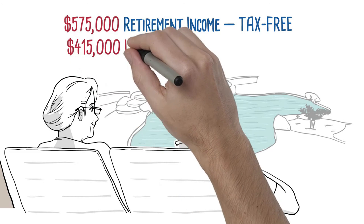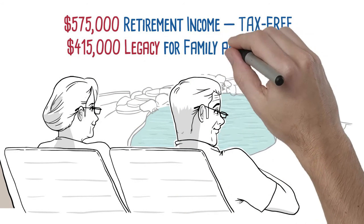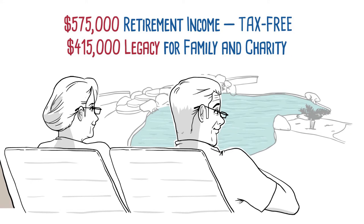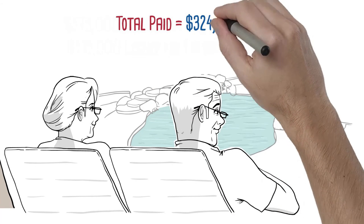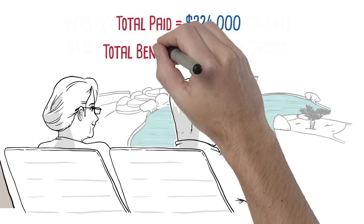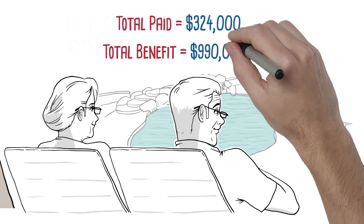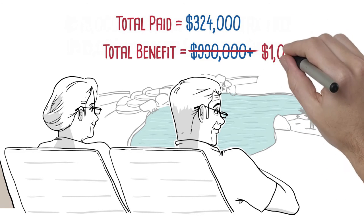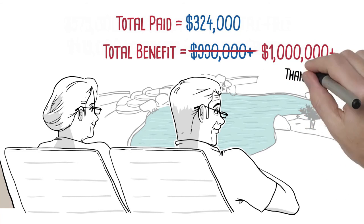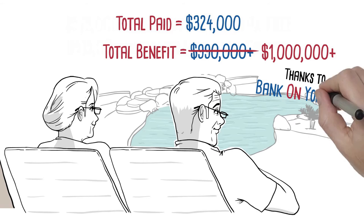And there's still a death benefit of $415,000, so Kevin can leave a legacy for his family and his favorite charity. By the time Kevin cashes in his chips, he'll have paid a total of $324,000 into his plan, but the total benefit to him and his family will be more than $990,000. And when you include the $25,000 in interest he recaptured by being his own source of financing for his trucks, that's over $1 million, all thanks to his Bank on Yourself plan.